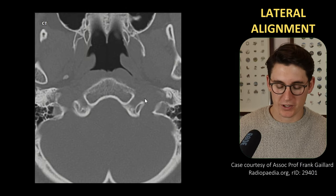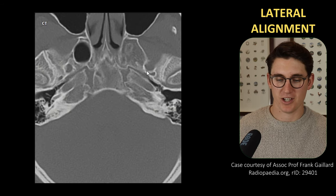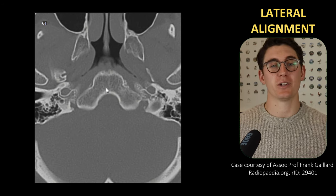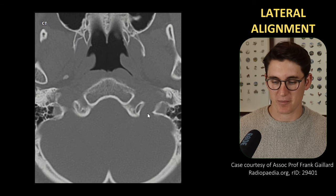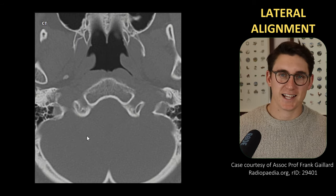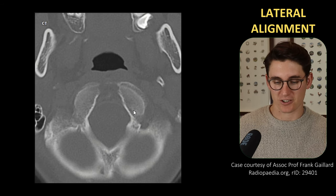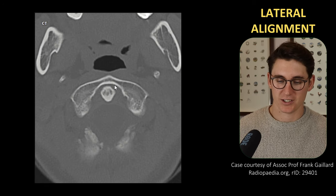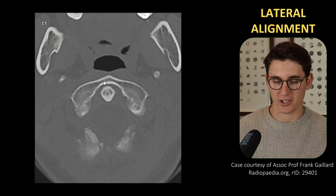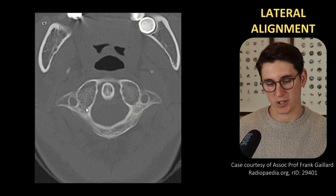Here we have an axial bone-windowed CT. We're going to head up into the skull base first. This is an image you should be familiar with if you've watched the skull base foramina videos — you should be comfortable naming these various foramina. As we head down towards our occipital bone, we should find our occipital condyles that articulate with our atlas, our C1. Here is the anterior body of our C1, the anterior arch, and as we head down inferiorly, our posterior arch of C1.